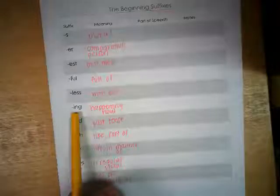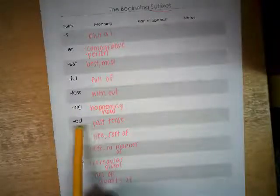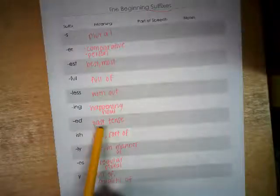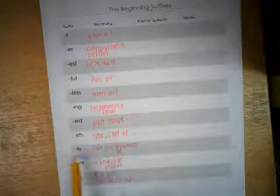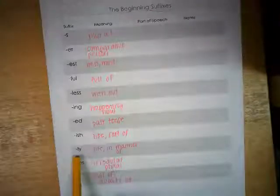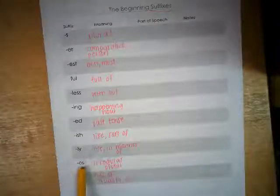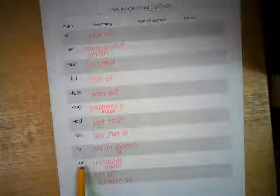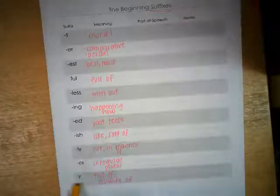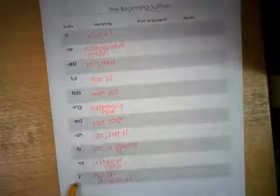Vowel suffix I-N-G says 'ing' and it means happening now. Vowel suffix E-D says 'id', 't', or 'd' and it means past tense. Vowel suffix I-S-H says 'ish' and it means like or sort of. Consonant suffix L-Y says 'le' and it means like or manner of. Vowel suffix E-S says 'es' and it is an irregular plural. And vowel suffix Y says 'e' — because always at the end it's going to say 'e' — and it means full of or quality of.